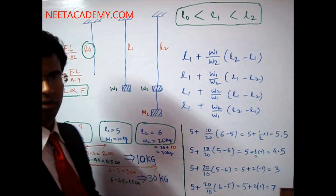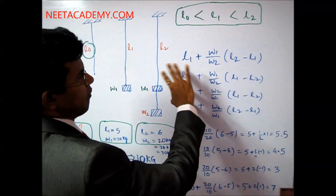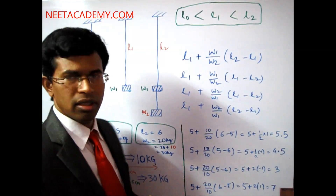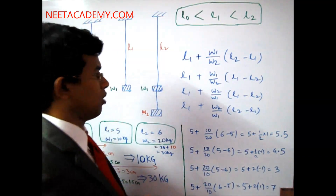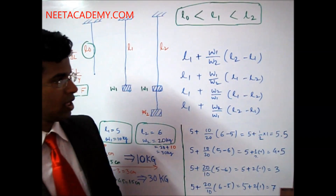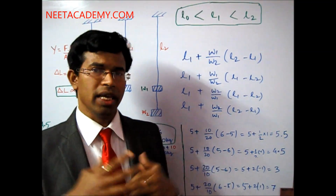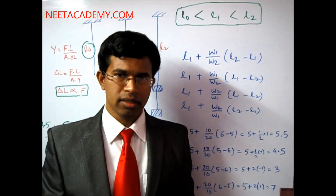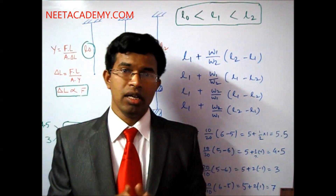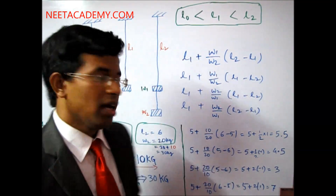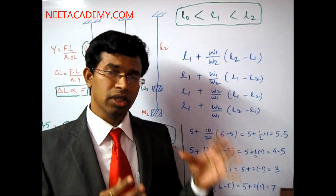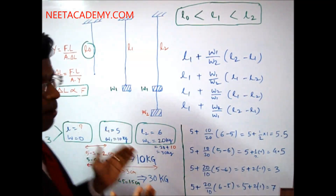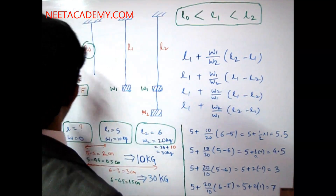They have given four answer options with different permutations and combinations, for example: l1 plus (w1 divided by w2) times (l2 minus l1), and similarly three other options. If you go by the formula method, this problem will take approximately five minutes and the chance of getting it wrong is about 95%. I'm going to show you a logical shortcut to solve it easily.